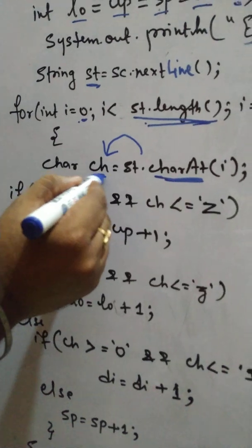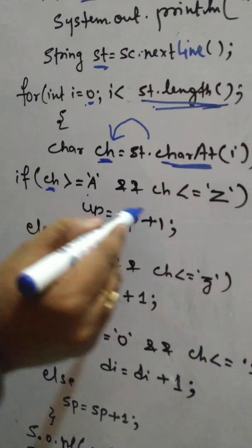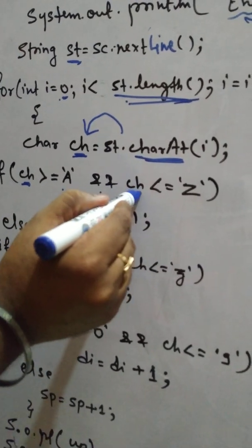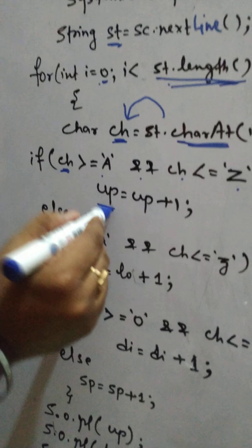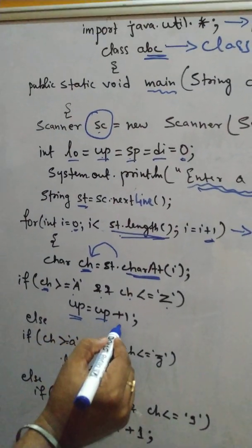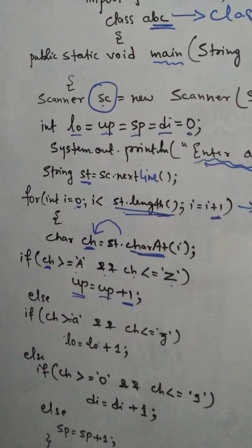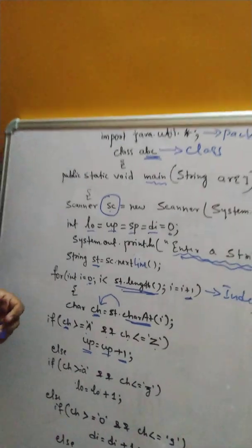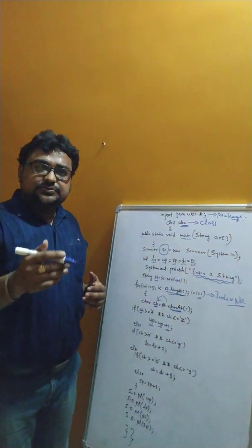Now I have to work on ch. If the value of ch is greater than capital A and ch value is less than capital Z, the value of up, that up value in beginning is 0. The value of up will be increased by plus 1. Means as a number of upper case capital letter we will get, the value of up will increase by plus 1, plus 1, plus 1, like that.